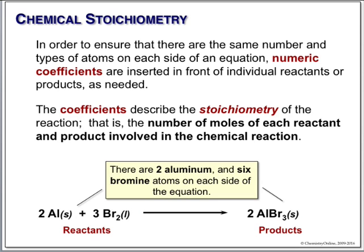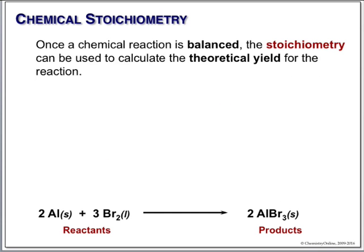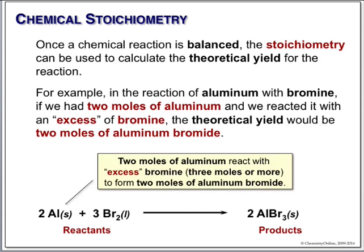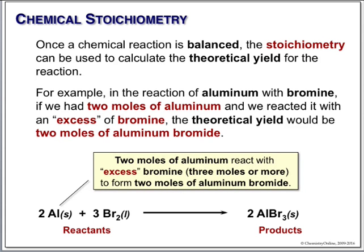Two aluminums, three bromines, two aluminum bromides. When we talk about the stoichiometry of a reaction, what we're going to do today is use the basic concept of stoichiometry to calculate what's known as a theoretical yield. That is, if the reaction went perfectly, we would expect two aluminums and three bromines to give us two aluminum bromides. That's the theoretical yield. In reality, theoretical yields are very seldom observed.